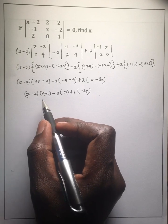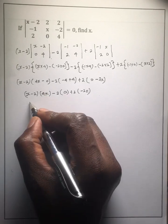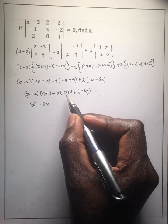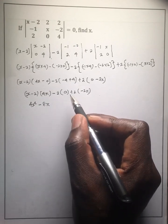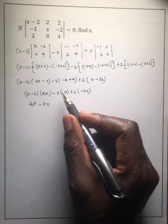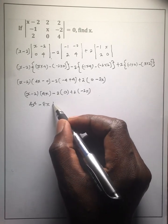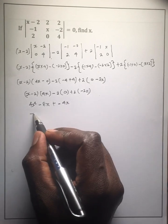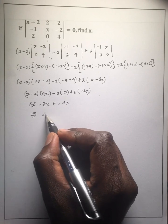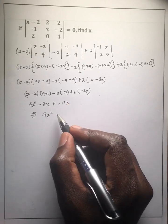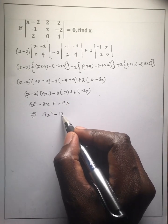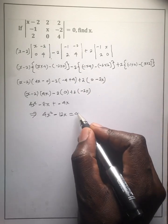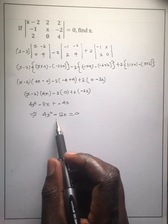If we open up this bracket, we get 4x squared minus 8x. Then 2 times 0 is 0, so the middle term is 0. We're left with negative 4x, so our determinant is 4x squared minus 12x. And remember it was a singular matrix, so this determinant is equal to 0. So we need to solve for x.